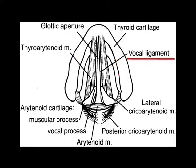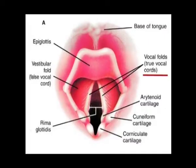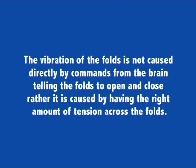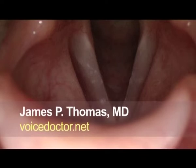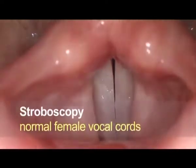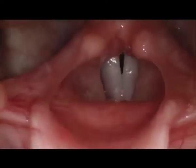The vocal folds are two ligaments — that is, fibrous tissues — which are covered in mucous membrane. In the middle, they are hanging free. For breathing, the vocal folds are open and held wide apart so that air can pass in and out of the lungs unimpeded. The vibrations of the folds are not caused directly by commands from the brain telling the folds to open and close. Rather, it is caused by having the right amount of tension across the folds. When the folds are shut, the air below them cannot escape, yet the pressure from the rib muscles has the effect of forcing the air out.